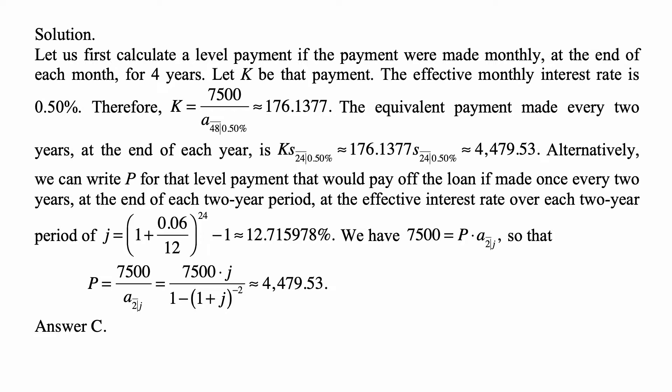We write out the formula for A angle 2, which is 1 minus V squared over J, and V is 1 plus J to the negative 1. So this becomes 7500 times J over 1 minus 1 plus J to the negative 2, with the value of J plugged in. We get the same answer, 4,479.53.